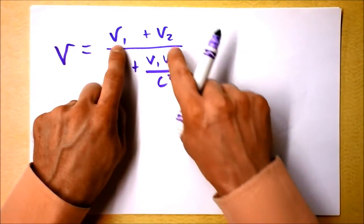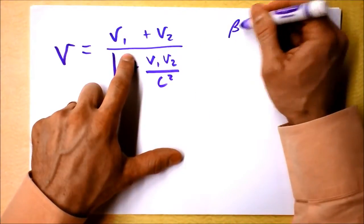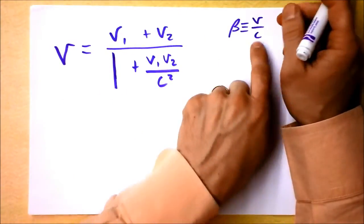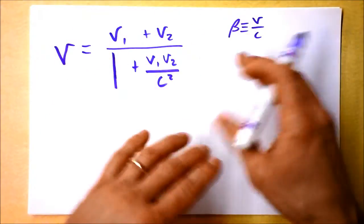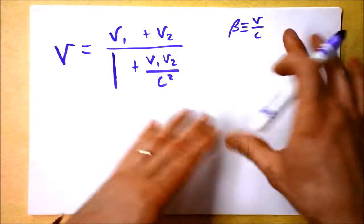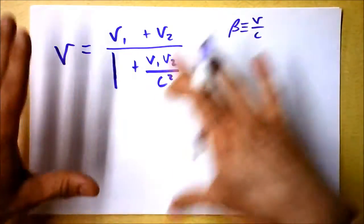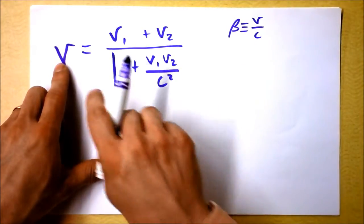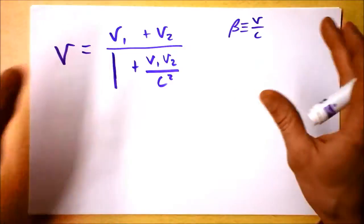Even if one velocity is 90% the speed of light and another is 97% the speed of light, we define beta to be the velocity divided by the speed of light, so we can talk about ratios. Everything cancels in these nice equations, and we can always talk about beta instead of v as some fraction of the speed of light. The point is, we always make sure that the velocity the first thing sees the third thing going is always less than the speed of light.